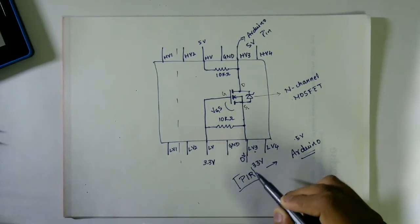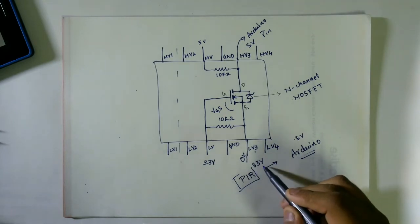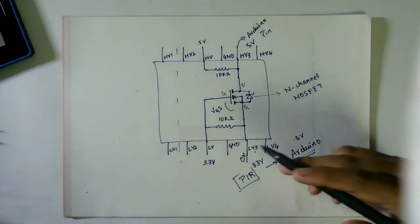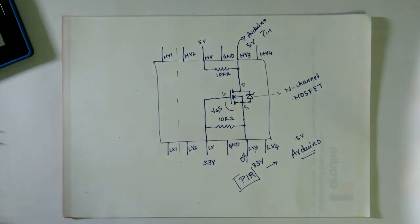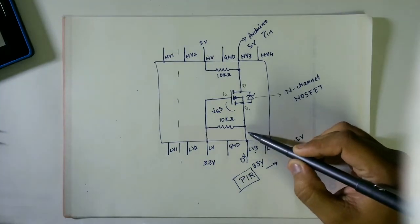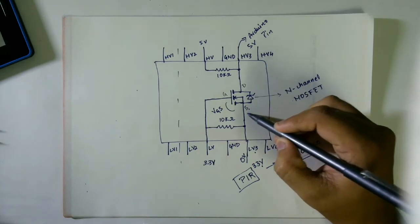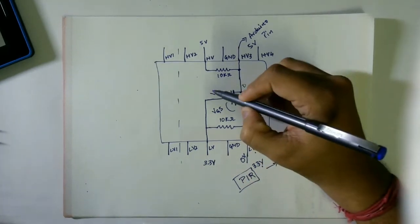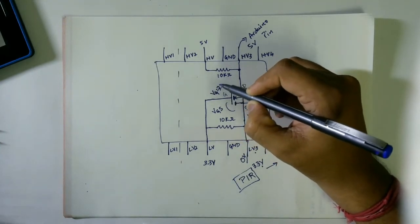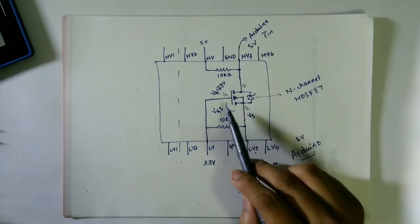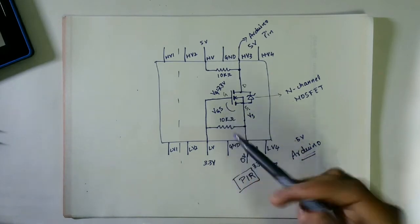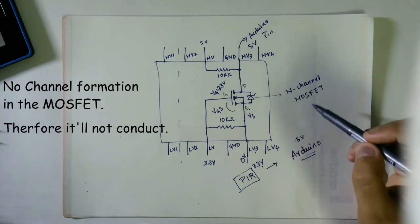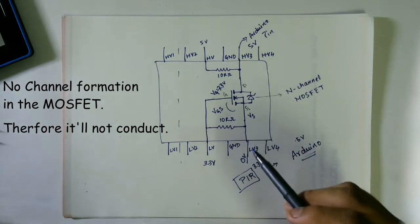The PIR sensor gives the output of 3.3 volts but Arduino accepts only 5 volts. So we have to shift 3.3 to 5 volts. So what actually happens is when it gives 3.3 voltages, the source voltage Vs will be 3.3 volts and gate Vg will also be 3.3 volts. So Vgs, the difference between these two, will be zero and therefore there will be no channel formation in the MOSFET and MOSFET will not be conducting.